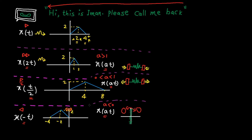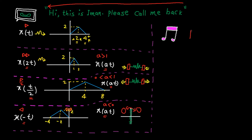To better understand the transformations covered so far and have a short break, I'm going to play a short part of a song and show you the impact of different transformations on the song. First, we will listen to the original song by Josh Woodward — a special thanks to him for his amazing song. Then I will play the signal with double speed and half speed, and finally I will apply the time reversal transformation to the song.